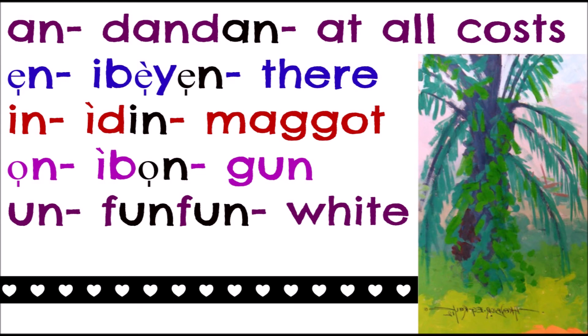The aromupe nasal vowels include: 'an' in 'dandan' (at all costs) — you're making a nasal sound; 'en' in 'ibanyi' (there) — that's a nasal vowel; 'in' as in 'iden' (maggot); 'ivan' (gone) — a nasal vowel; and 'un' in 'fufu' (white) — you're making a nasal sound. There are five aromupe vowels in total. I hope you enjoyed that — please ask questions in the comments below!